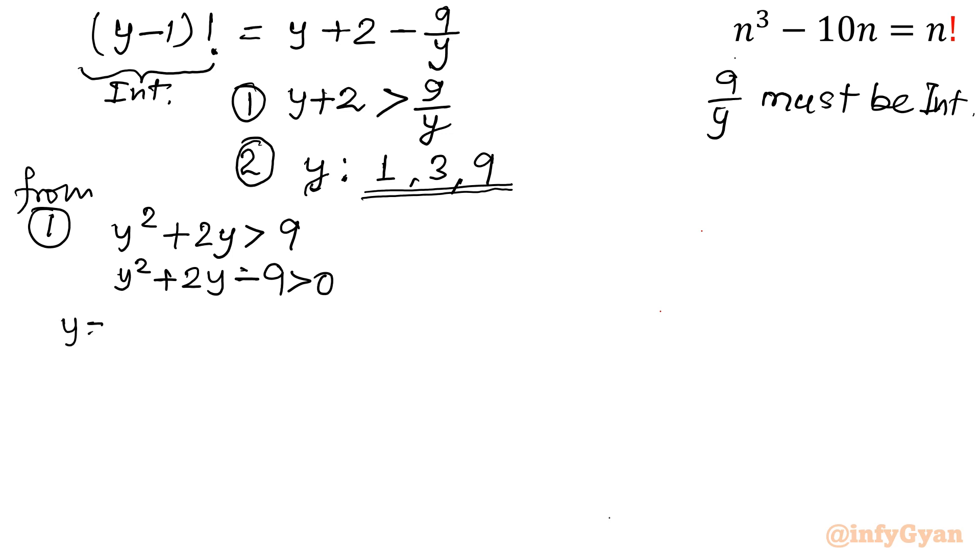Let us apply the quadratic formula. -b, so -2, plus minus square root b², so 4, minus 4ac. So minus times minus plus 36 over 2. So it will be -2 plus minus square root 40 over 2.